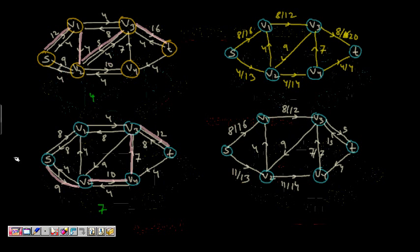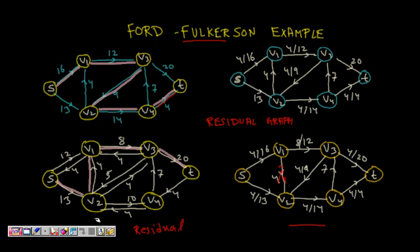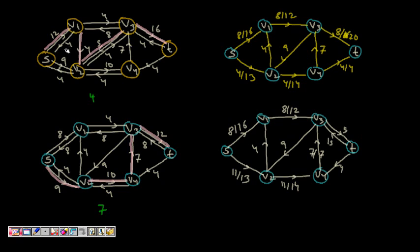We create another residual graph and find a third path: S→V1→V2→V3→T. The residual capacity along this path is 4 again: S→V1 has 12, V1→V2 has 4, V2→V3 has 4, and V3→T has 16. So the minimum bottleneck is 4.